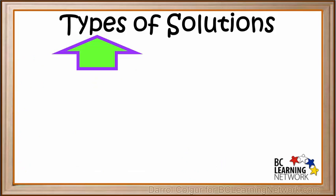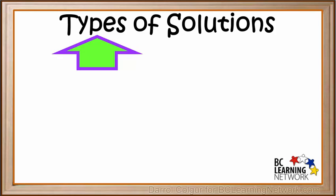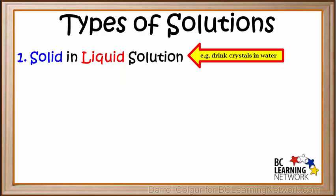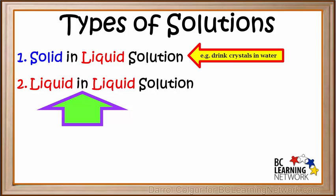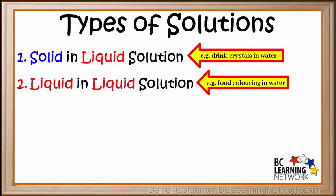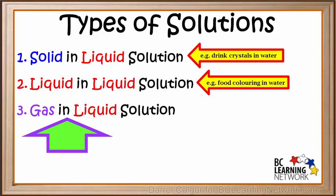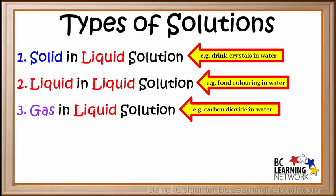We'll quickly review the types of solutions we showed you. First we looked at a solution of solid in a liquid. The example we used was drink crystals in water. Next we looked at a liquid in liquid solution. The example we used was liquid food coloring dissolved in water. Then we looked at a solution of a gas in a liquid. And the example we used was carbon dioxide gas dissolved in water to form carbonated water.